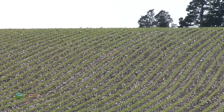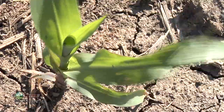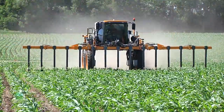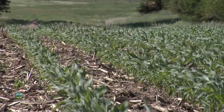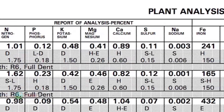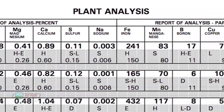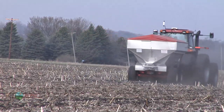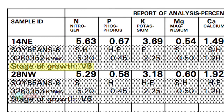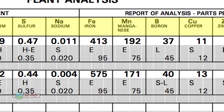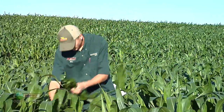Wouldn't it be nice if you could talk to your crop and it could tell you, 'Brian, I'm short on potassium'? That's exactly what plant tissue analysis does. I call it the report card for the farmer — it tells you exactly how good your fertility program is. When you look at a plant tissue analysis, it will tell you, depending on the stage of growth, what nutrient levels you are at and what your target level should be — rating them as excessive, high, sufficient, low, or deficient for various nutrients including nitrogen, phosphorus, potassium, secondary nutrients like sulfur, calcium, and magnesium, and the micronutrients.